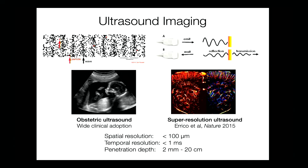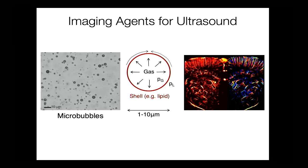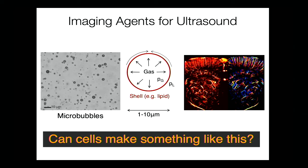The closest thing to cellular function that existed previously are contrast agents for ultrasound called microbubbles, which are used clinically. These are micron-sized bubbles of gas stabilized by typically a lipid shell. Because they are of lower density than water and water-based tissues, if you inject them into the bloodstream it helps you visualize blood vessels and cardiac function. This technique was used to enhance the contrast from vasculature. The question we asked a few years ago was: can cells make something like this?